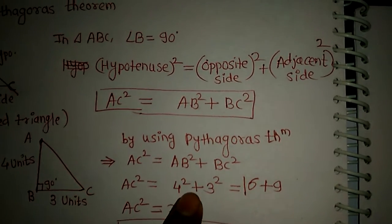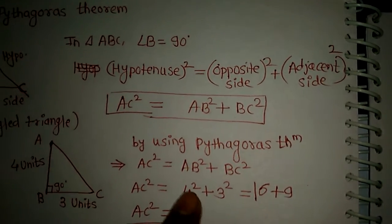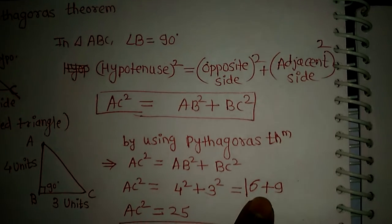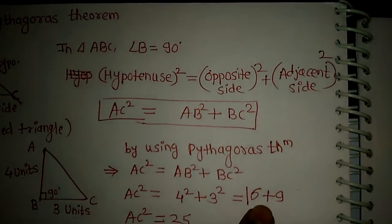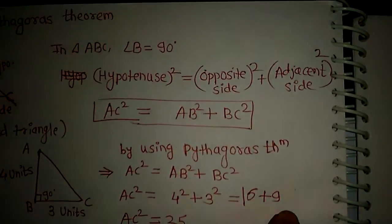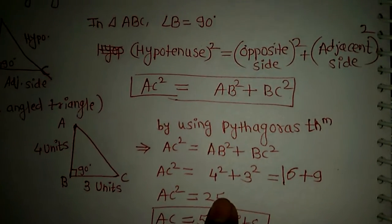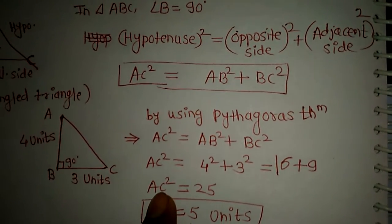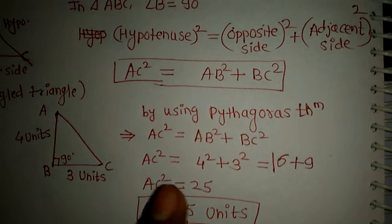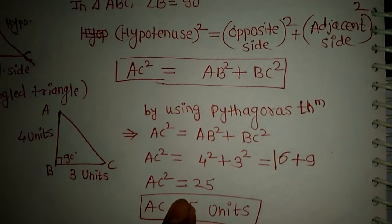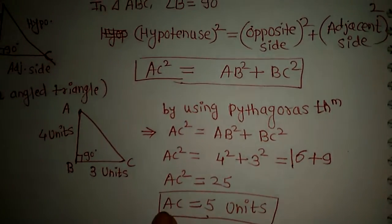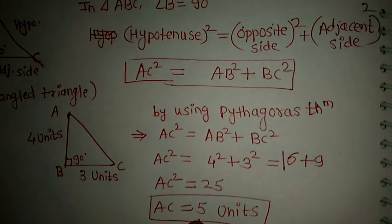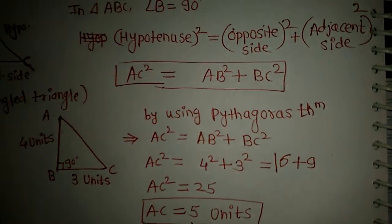Putting in the values of opposite side and adjacent side: AB is 4, so 4 squared plus 3 squared is equal to AC squared. 4 squared means 4 into 4, and 3 squared means 3 into 3. What we get is 16 plus 9 equals 25. So AC squared is equal to 25. Taking square root on both sides, the square root and square cancel out, giving AC is equal to the square root of 25, which equals 5 units.